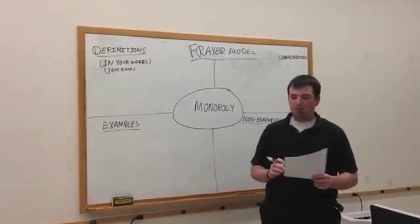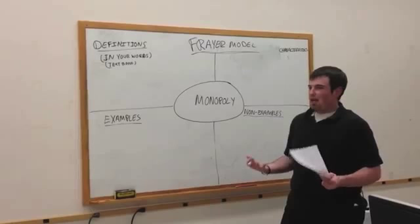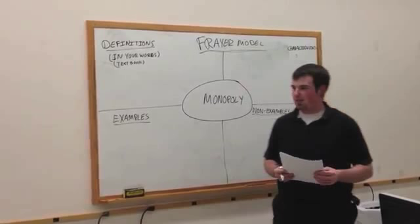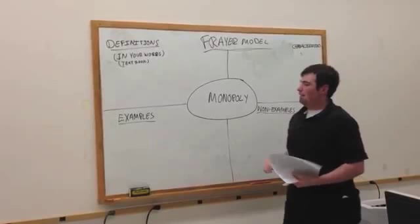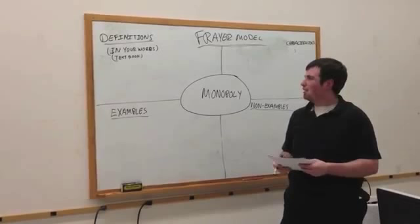So yesterday we started our unit on the growth of industry, and today we have about ten key terms or key vocab words that we need to define before we can start the learning process. And how we're going to define those words, we're going to use something called the Frayer Model. A Frayer Model is probably something you've never heard of, it's just a different technique for you to learn vocab words.